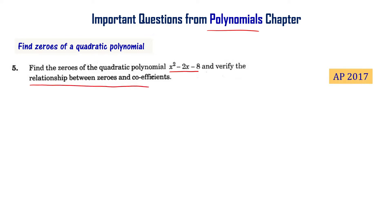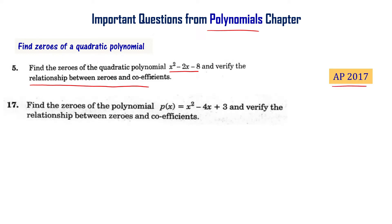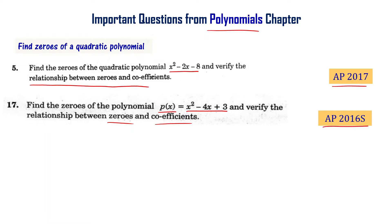This question appeared in the AP final exam 2017. Another version: find the zeros of polynomial p of x equal to x squared minus 4x plus 3 and verify the relationship between zeros and coefficients — from the AP final exam supplementary exam 2016.